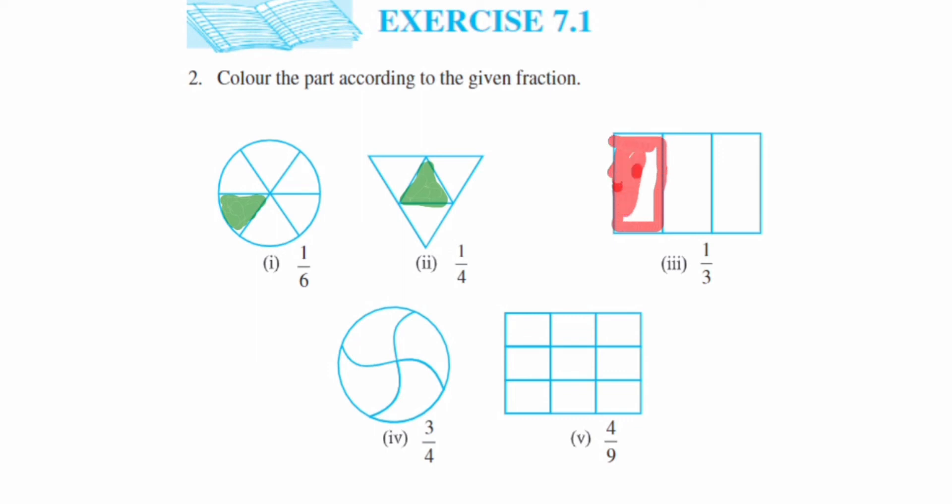So this is the part. Then next one we have 3 upon 4. So out of 4 they are asking us to color 3 parts. So 4 parts are given, you can just color any 3 out of it. So here we have, this is 1 part we have covered.